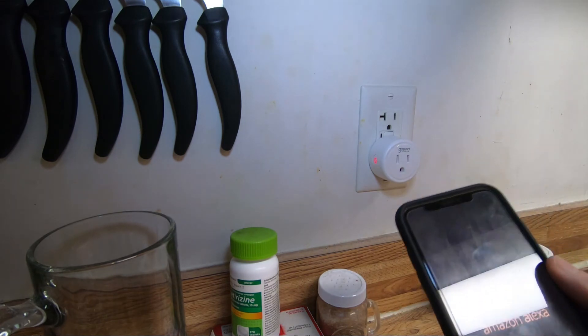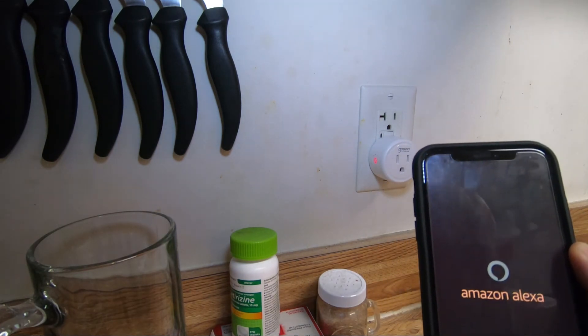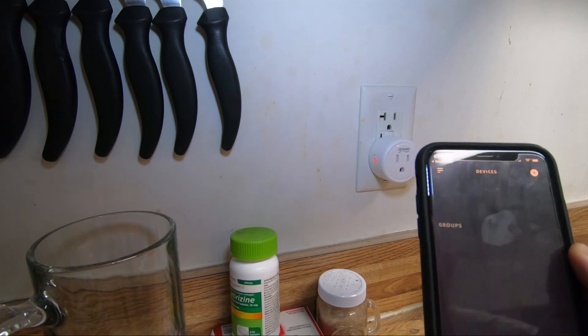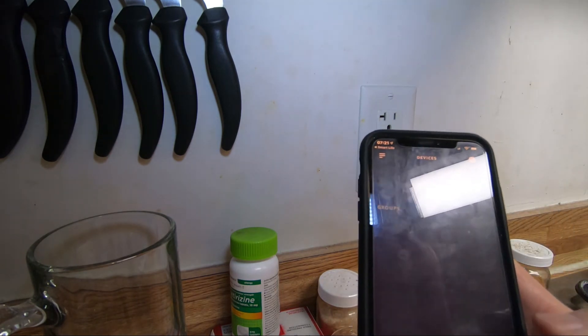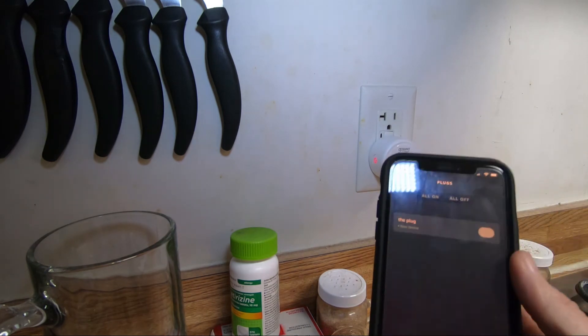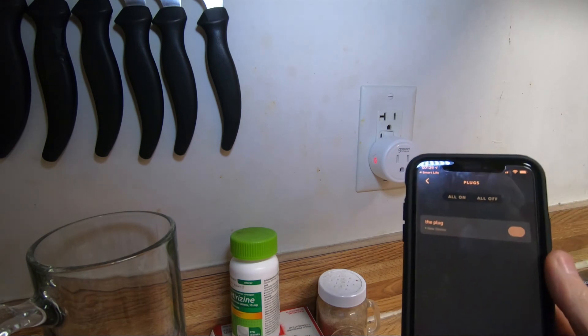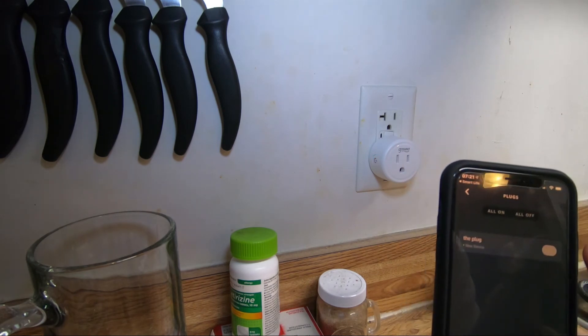We'll head over to the Alexa app and our smart devices here—goes right into the device section. Plug. Got a little green indicator showing new plug. And it's showing the plug is on, so it's already discovered it. Turn it on. Turn it off.